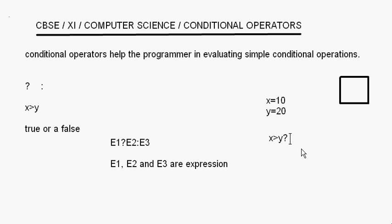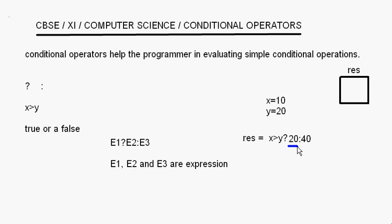Suppose I say: if x is greater than y, store 20, else store 40, and I want to put this in a variable called result. So I write: result = x > y ? 20 : 40. If x is greater than y, result gets the value 20 — that's the true part. If not, result gets the value 40. In our case, result will get 40.